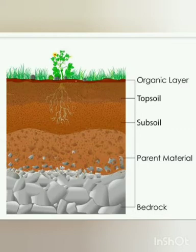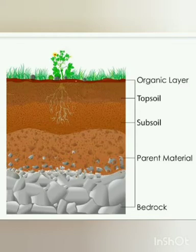Plants jo hain is layer mein grow karte hain. Jo plants ki roots hoti hain wo achhi tarha spread hoti hain is layer mein aur fix hoti hain. Soil ki sari layers mein sab se zayadha fertile layer hoti hai top soil — yaani sab se zayadha zarkhiaz layer.